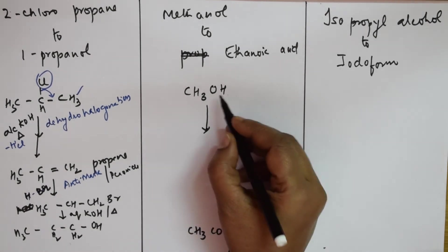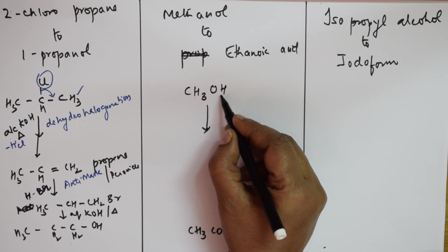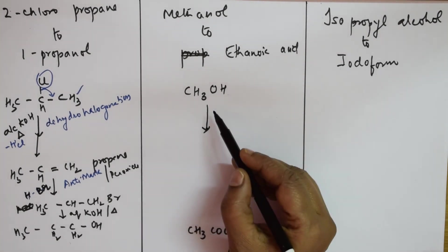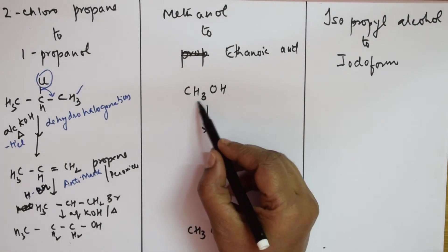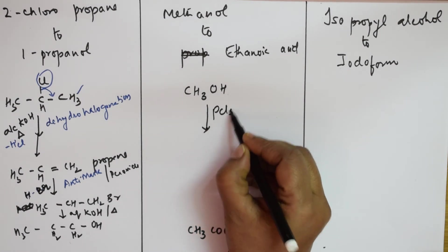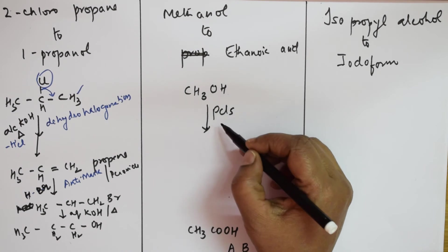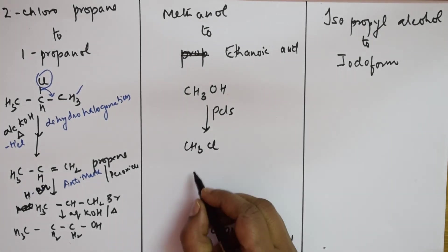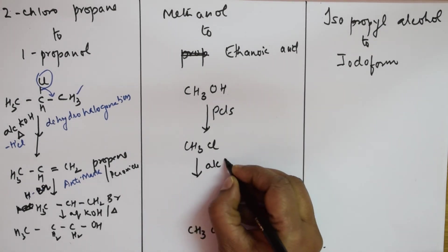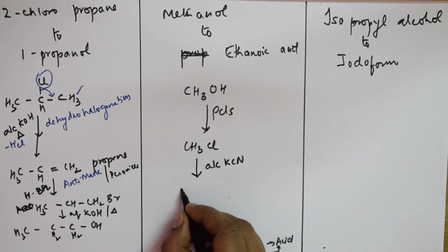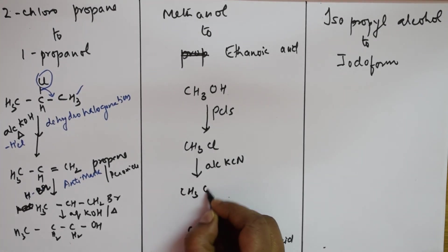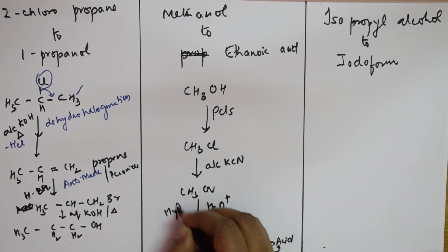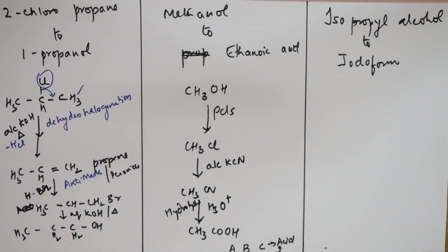This is methanol. Try to introduce PCl5. When I introduce PCl5, POCl3 and HCl all comes out. You're going to get CH3Cl. Now we are going to introduce alcoholic KCN. When you introduce this, Cl and this CN comes out - CH3CN. Now simple, in hydrolysis, that is H3O+ hydrolysis, you'll directly convert it into acid. Remember this sequence always.